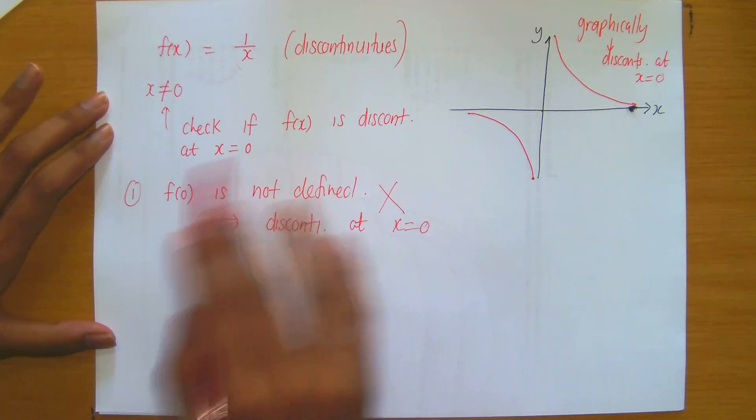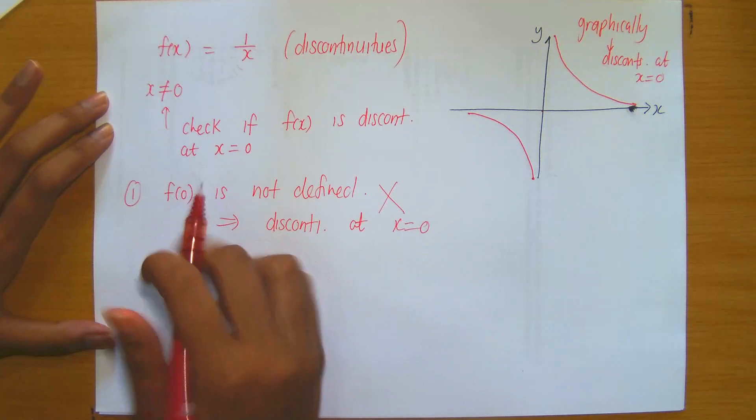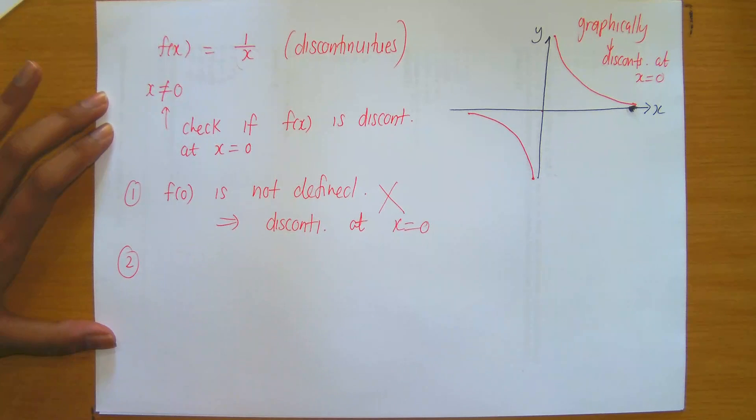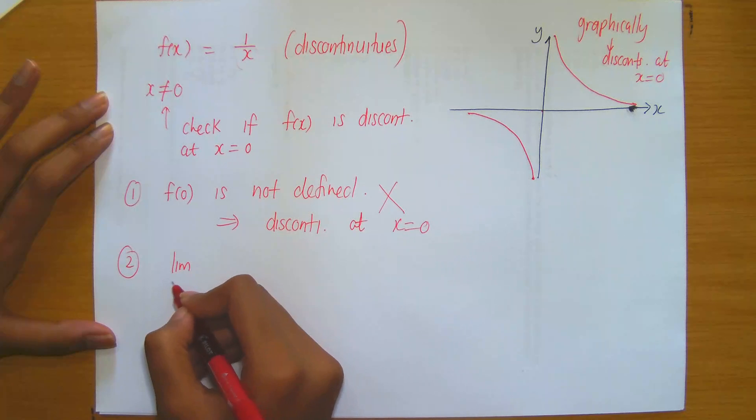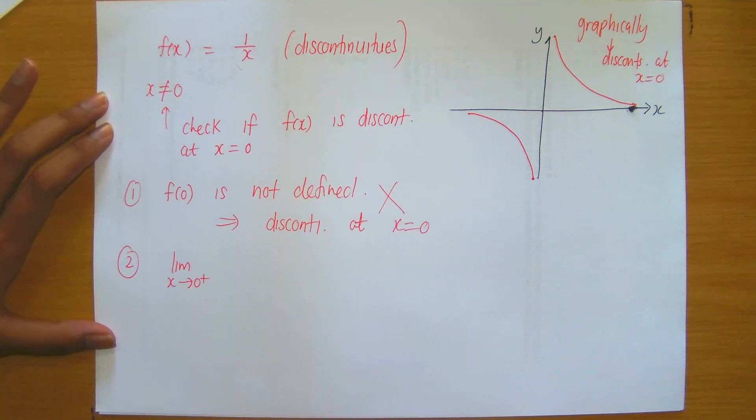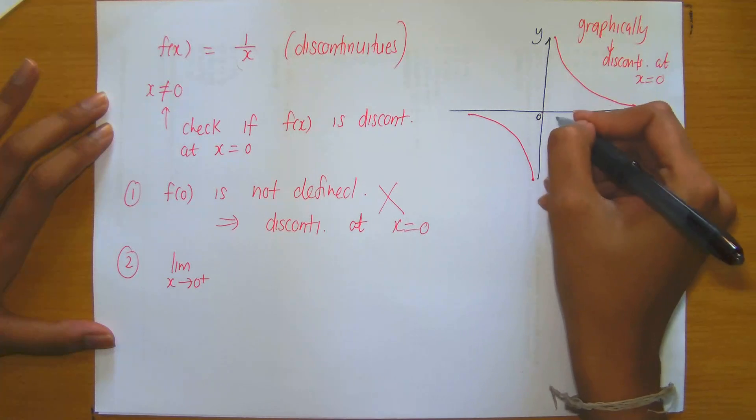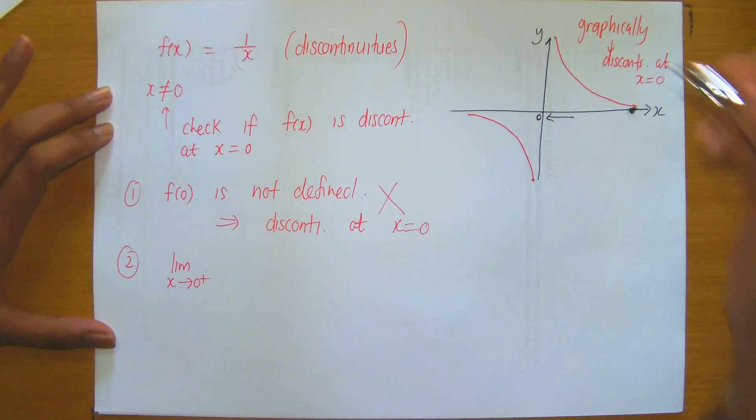But just for fun, let's continue. Let's just suppose that we didn't know it was discontinuous from looking at number 1. If I went to step 2, I would now have to look at the limits from the left and the limits from the right at 0. Let's go from the right. If I had to approach 0 from the right, that's what I'm doing.